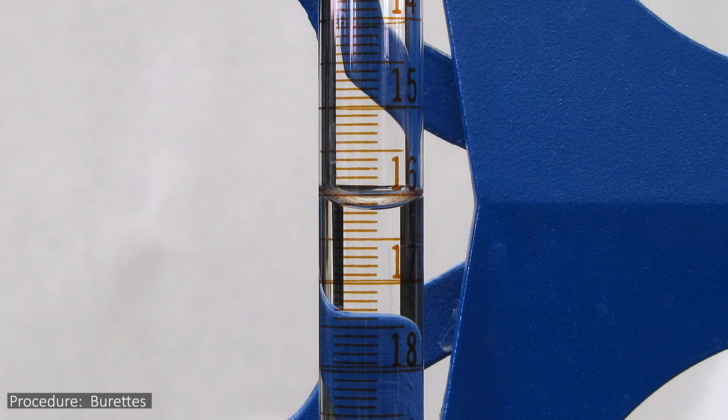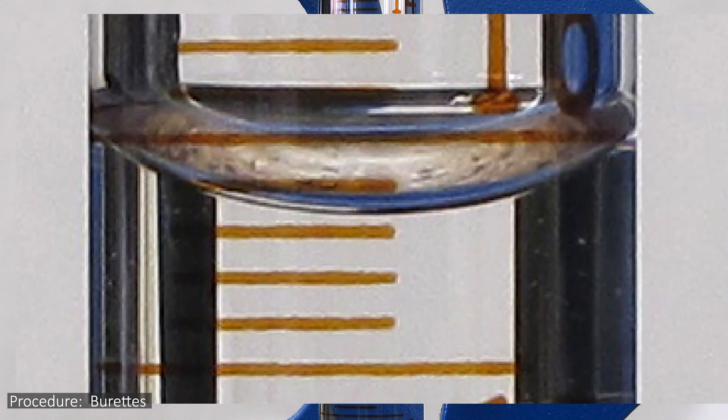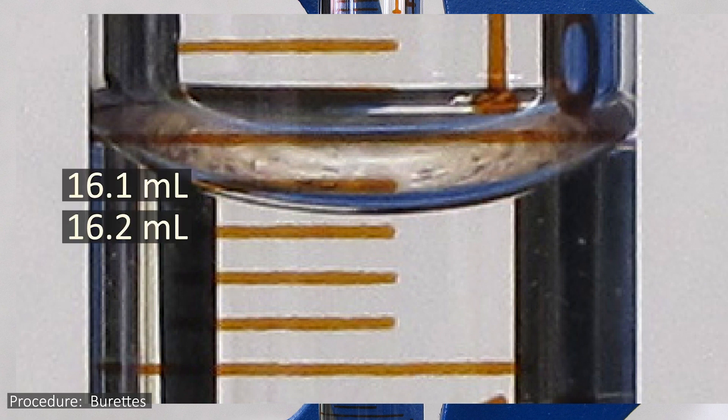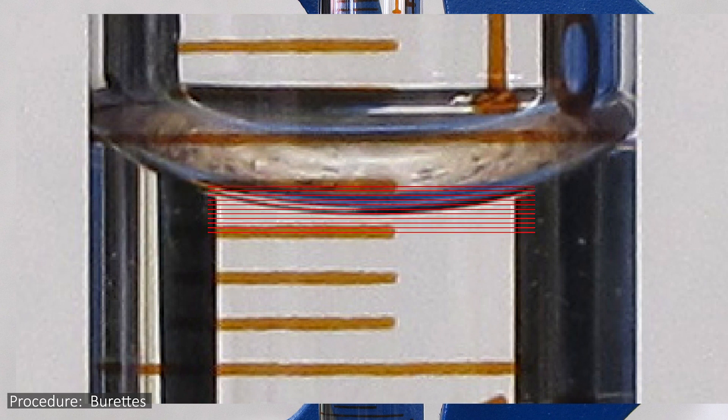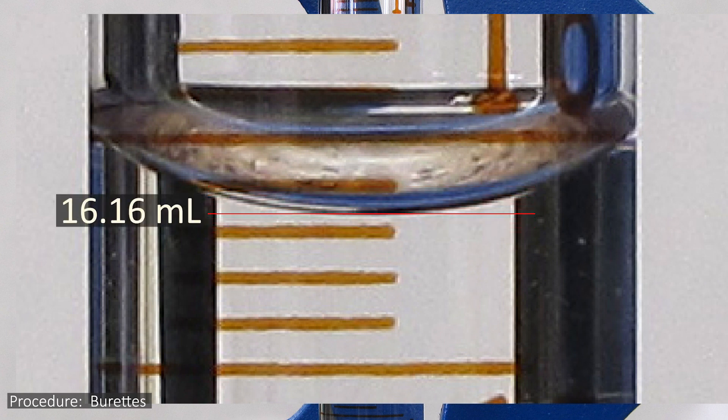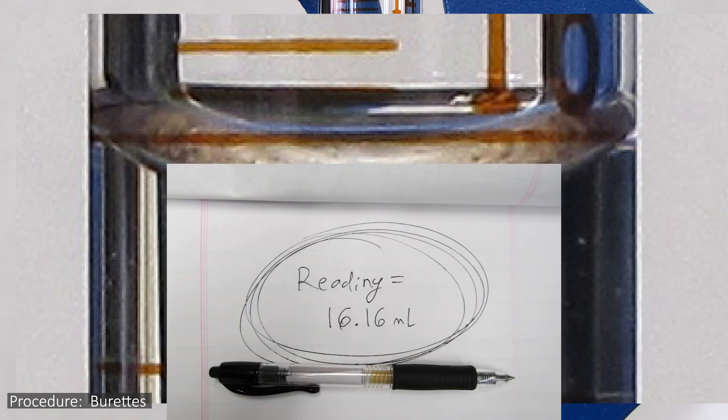To show you how to do this, let's look at a close-up image of the meniscus in a burette. The bottom of the meniscus here comes down to a point between the 16.1 ml and 16.2 ml marks. And if we use our imagination to divide the space between the markings into 10 segments, you can see it lines up best with the 16.16 marking. So we would record this as 16.16 ml.